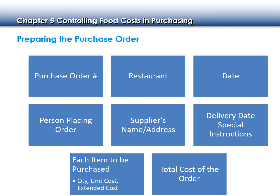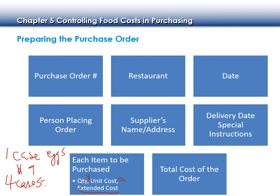The vendor generates the invoice. For each item being processed we have the quantity, the unit cost — which is the cost for one unit — and then the extended cost. The extended cost is the quantity times the unit cost. So if one case of eggs is $9 and I order four cases, my extended cost is $36. We add up the extended cost for all our ingredients and we get the total cost of the order.